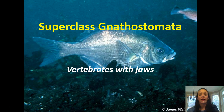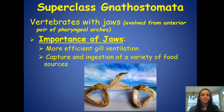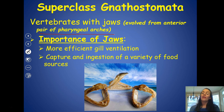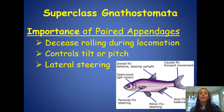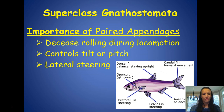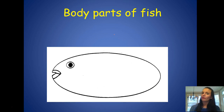Moving to superclass Gnathostomata — these are our first vertebrates with jaws. Jaws are thought to have evolved from an anterior pair of pharyngeal arches, and they're important for two reasons: more efficient gill ventilation and the ability to capture and ingest a wider variety of food sources. These fish also have paired appendages, which decrease rolling during locomotion, control tilt or pitch, and help with lateral steering. You may want to pause as we draw all the parts of a fish.